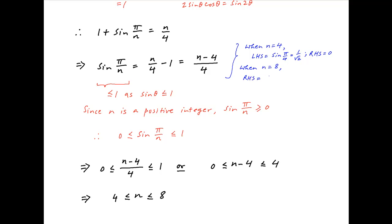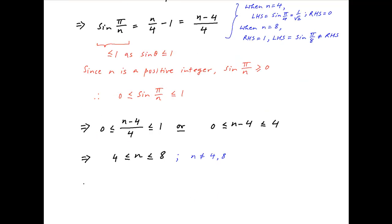Similarly, when n = 8, the right-hand side is (8 − 4)/4 = 1, and the left-hand side is sin(π/8), which is clearly not equal to 1. Therefore n = 8 also does not satisfy the equation. Both n = 4 and n = 8 are ruled out, so n is strictly greater than 4 and less than 8, which is the required answer.